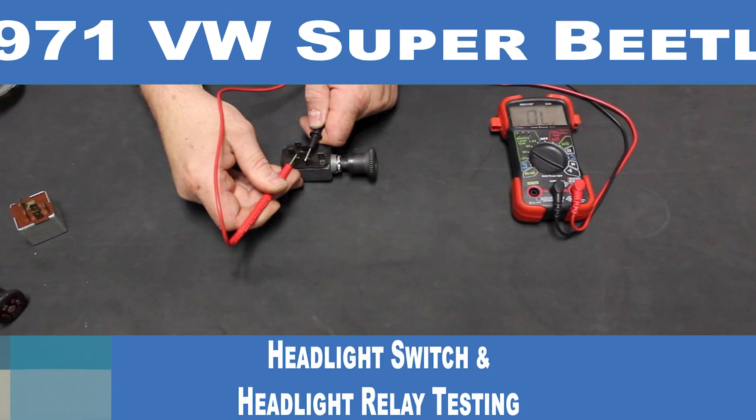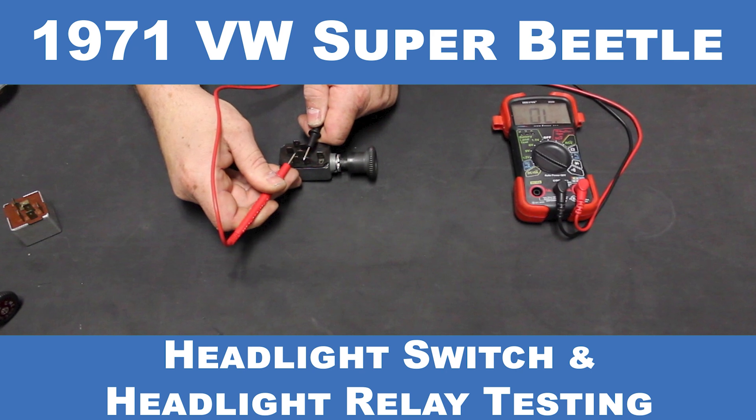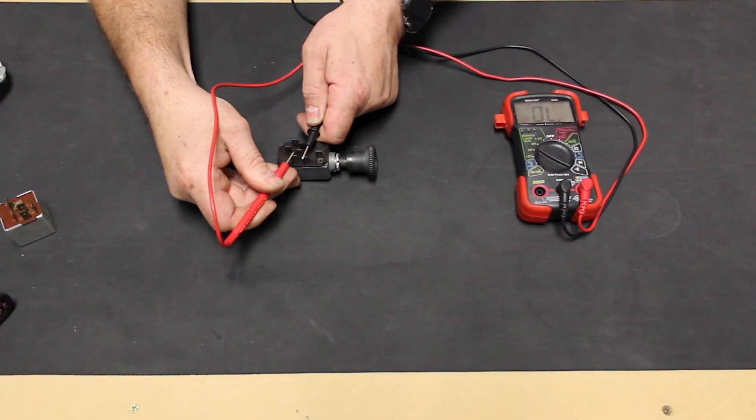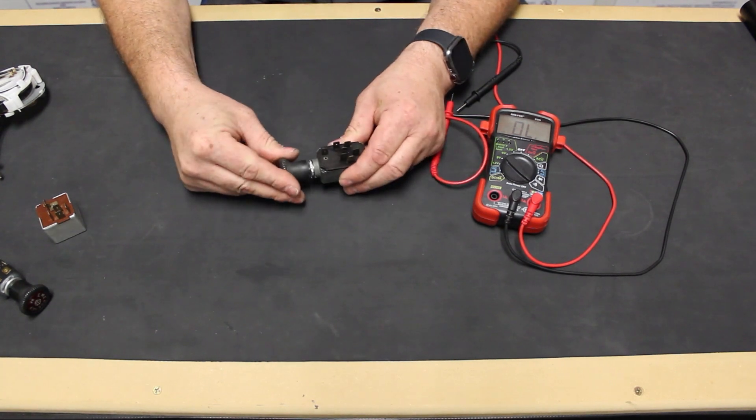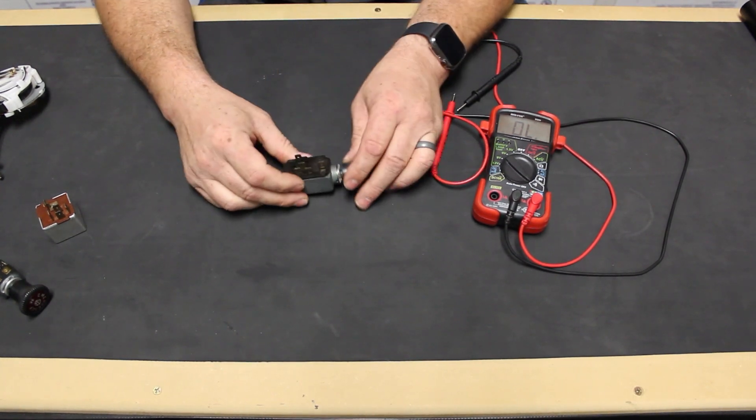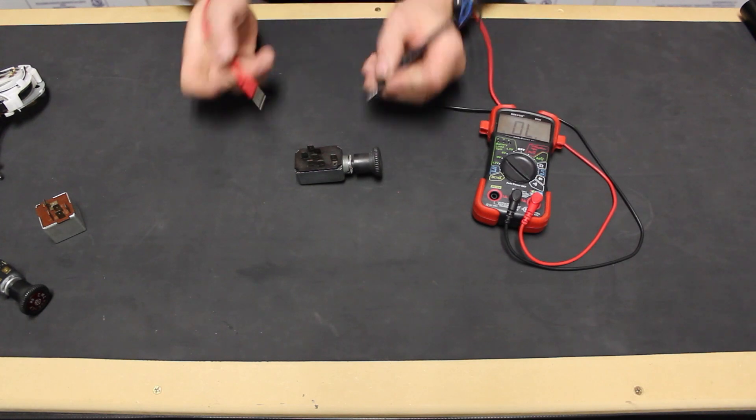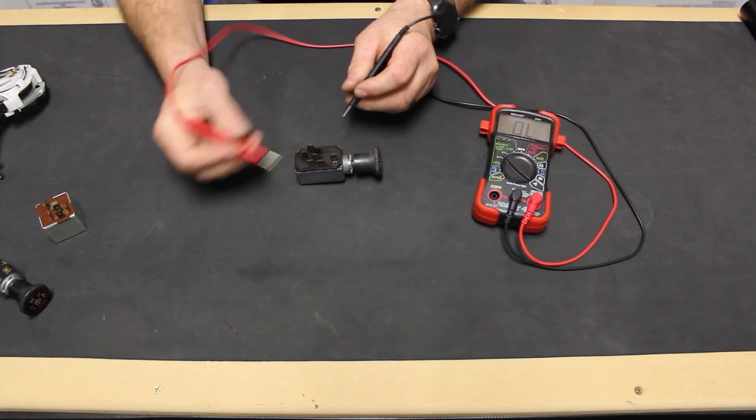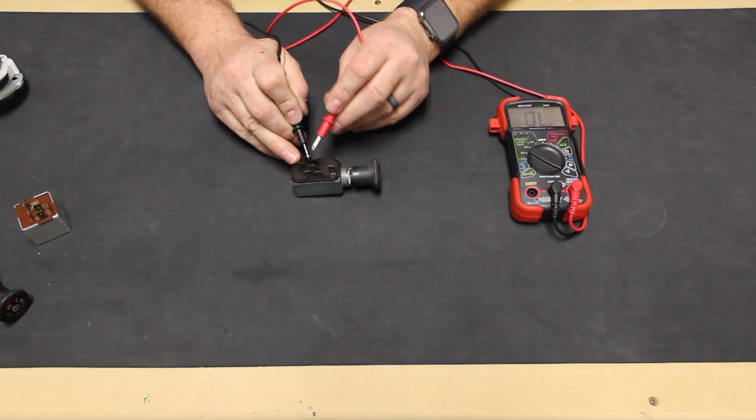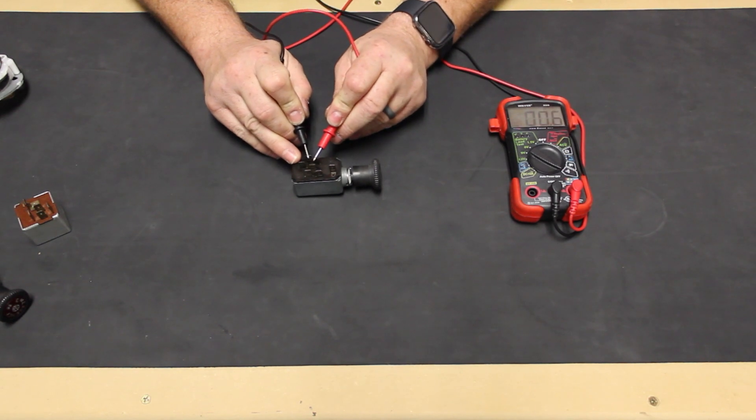In this video, we're going to test our original headlight switch and the headlight relay. We're going to start with the headlight switch. We'll use a multimeter set to test continuity and we have it set to indicate with an audible beep. We start by testing continuity between the two 30 terminals, which are interconnected.